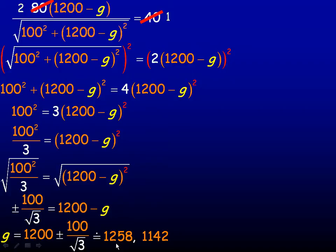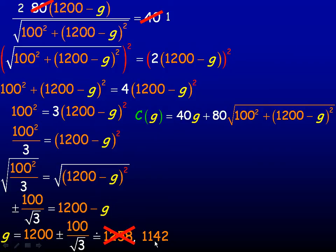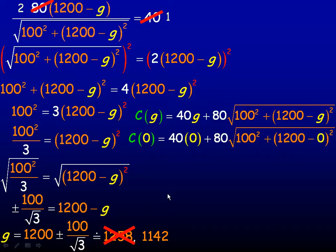Remember, this number is not within the interval we're asked to solve this on between 0 and 1200. So we'll discard the 1258. So what we want to do now is check the cost for 1142, 0 and 1200. Remember, 0 and 1200 were the interval upon which we're searching here. So we'll find the cost of 0 if the underground distance is 0, so we're going completely underwater. And that works out to, if we evaluate this, $96,333.